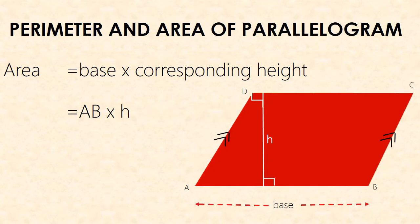Next, formula for the perimeter and area of the parallelogram. The base value is AB and the corresponding height is H. The area equals base times corresponding height, that is AB times H.